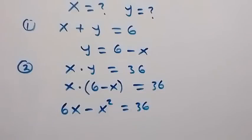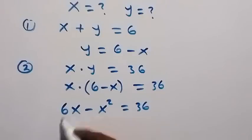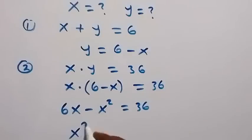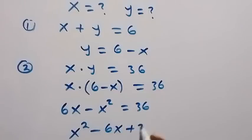This becomes 6x minus x squared equals to 36. And then we can rearrange to form an equation. I will take everything from this side to this side. So we have x squared minus 6x plus 36 then equals to 0.